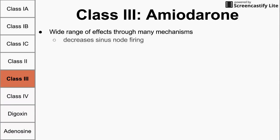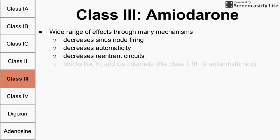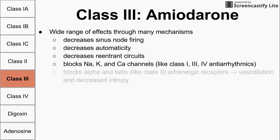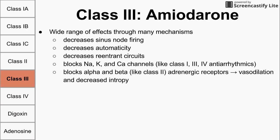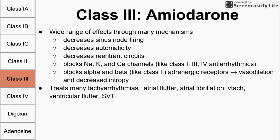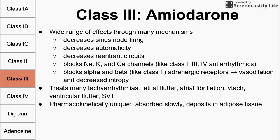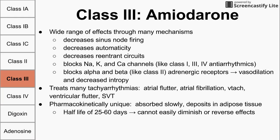Amiodarone is widely known for having effects through many mechanisms: it decreases node firing, decreases automaticity, decreases reentrant effects, and blocks many types of channels — including sodium, potassium, and calcium — and also acts like a beta blocker. Many tachyarrhythmias can be treated with amiodarone, but it has unique pharmacokinetic properties: it lasts about 25 to 60 days, and its effects cannot easily be diminished or reversed, which may make physicians hesitant to use it.